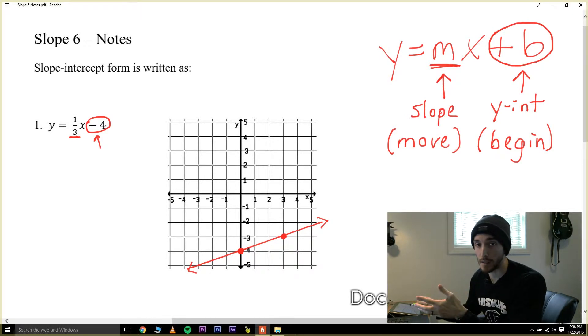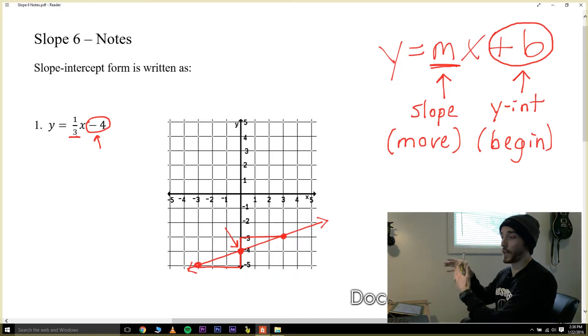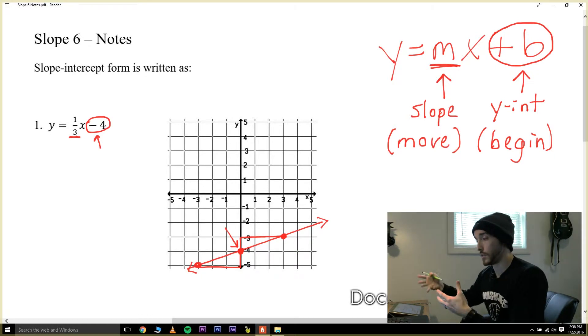Now I want to point one thing out that will help you later on. Sometimes the graph maybe isn't big enough to go up and right. So as a backup option, how else could we have followed a slope of one-third to get on that line besides going up and right? Alternatively we could have gone down one and left three and we still would have come across a point on that line. So sometimes if you run out of space and you can't go up and right, alternatively you can go down and left.